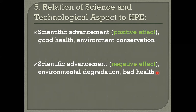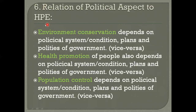Now the relation of the political aspect to health, population, and environment. Political aspect includes political system, political condition, and plans, policies, and programs of the government. Environmental conservation depends on the political system, condition, plans, and policies of the government — and vice versa. If the political system and conditions are good, there will be good environmental conservation.